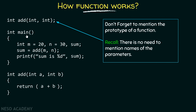After that, we have a main function, and inside this main function we have three variables m, n, and sum. m contains value 20, n contains value 30, and sum will not contain any value — whatever will be the result will get stored inside this variable.